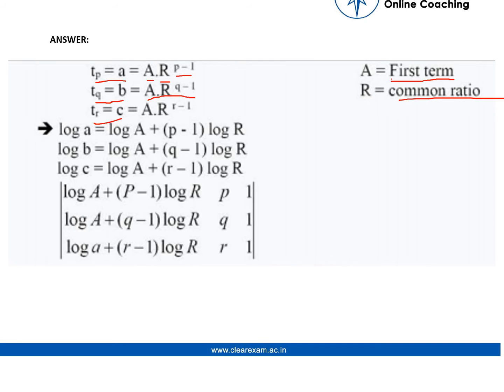So taking log on both sides, log a can be written as log A plus (p-1) log R. Log b is equal to log A plus (q-1) log R. Similarly, log c can be written as log A plus (r-1) log R.